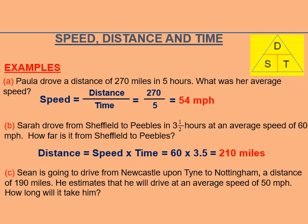In this case, Sian is going to drive from Newcastle upon Tyne to Nottingham, a distance of 190 miles. He estimates that he will drive at an average speed of 50 mph. How long will it take him? When it says how long, they are asking you to find the time.